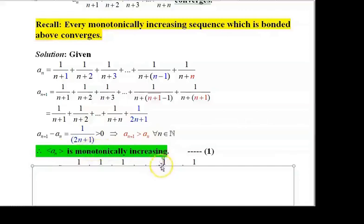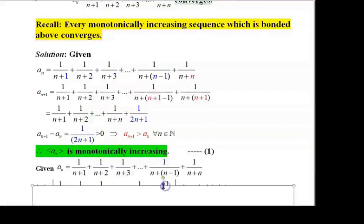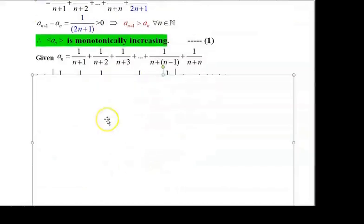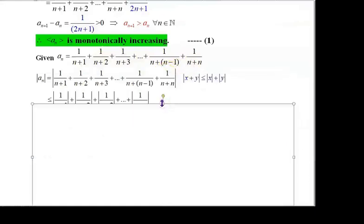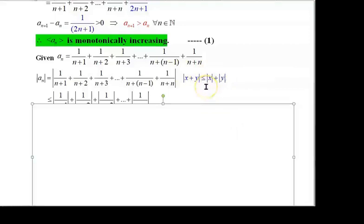Now the second part is to show that aₙ is bounded above. For this, again consider aₙ = 1/(n+1) + 1/(n+2) + 1/(n+3) + ... + 1/(n+n). We know that |x+y| ≤ |x| + |y|, that is the triangle inequality. Using this triangle inequality, we are going to show that aₙ is bounded above.